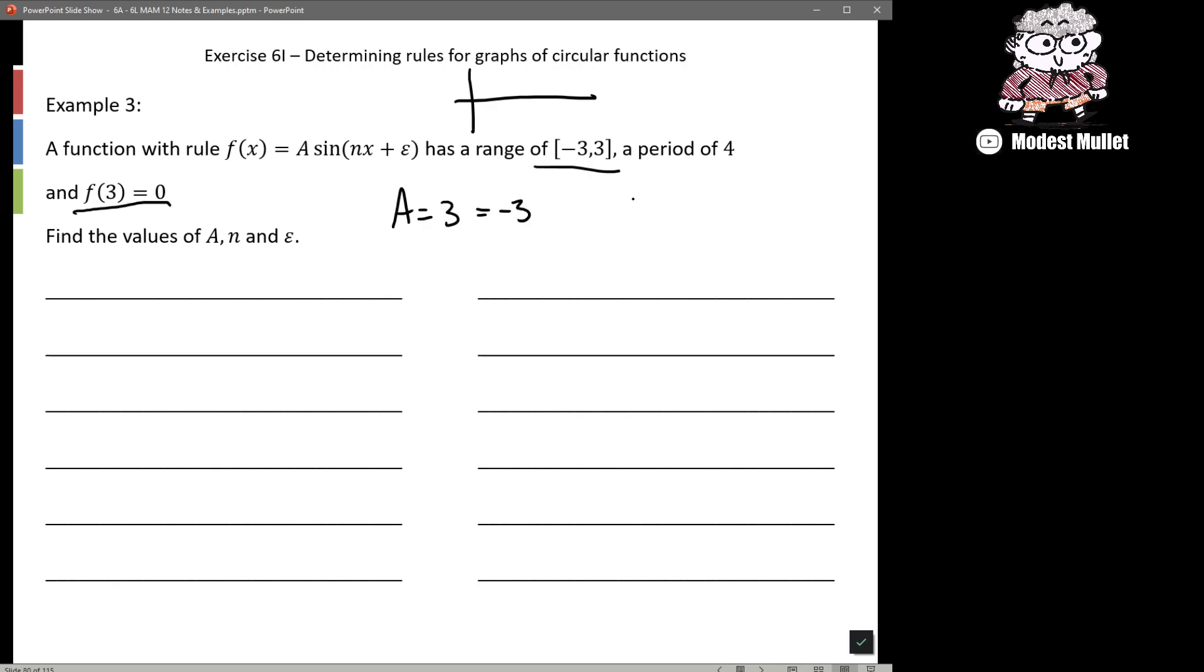It has a period of 4, so we can use that to find our n value, and we might also rewrite our function in the way we're used to seeing it. So a sin(n(x + ε/n)), and since we've taken n out as a common factor, and ε is epsilon.